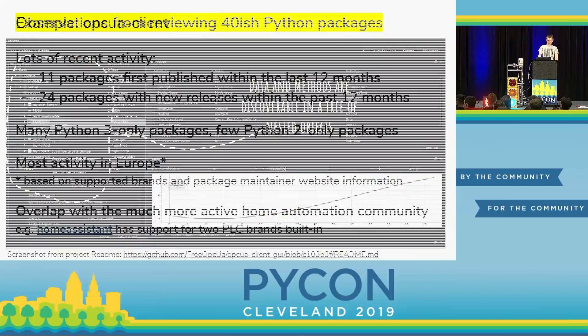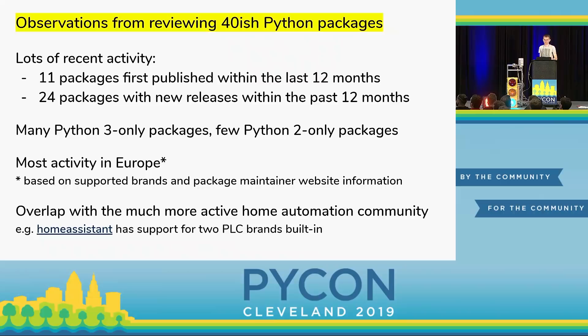I've reviewed about 40 packages and a couple of things really surprised me. There's a lot of recent activity — many packages started in the last year and are actively maintained. Many are Python 3 only with very few Python 2 only, which tells me this space is gaining traction compared to when I first did automation with Python about five years ago. Most of the activity is based in Europe, which influences which brands and protocols are supported. There's also a surprising amount of overlap with the home automation community.